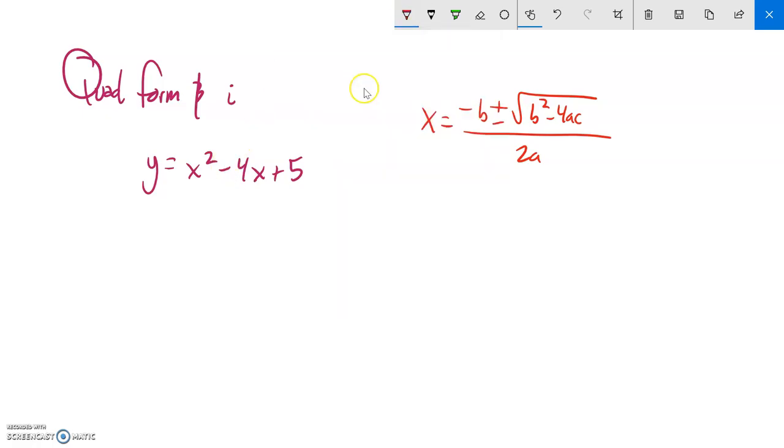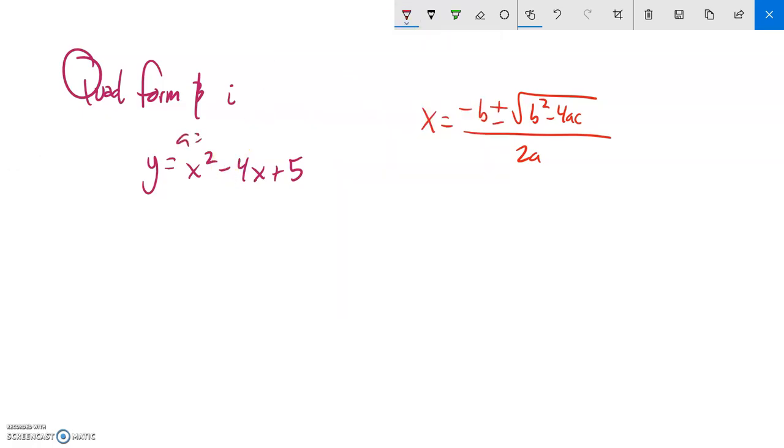And so, remember in this case, a is 1, b is negative 4, c is 5. So let me plug in those values. So negative b, so negative negative 4 plus or minus the square root of b squared. So negative 4 squared minus 4 times a times c all over 2a. Negative negative 4 is positive 4. Negative 4 squared is 16 minus 20, 4 times 1 times 5, all over 2.